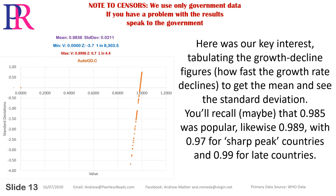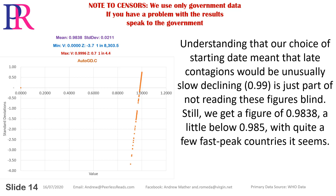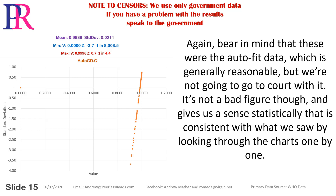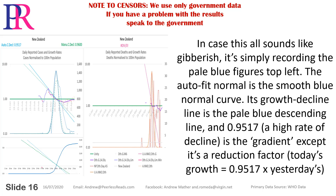Our key interest was tabulating the growth/decline figures — how fast the growth rate declines. To get the mean and see the standard deviation: you may recall that 0.985 was popular, likewise 0.989, with 0.97 for sharp-peak countries and 0.99 for late countries. Understanding that our choice of starting date meant late contagions would be unusually slow-declining, 0.99 is just part of not reading these figures blind. We get a figure of 0.9838, a little below 0.985, with quite a few fast-peak countries.